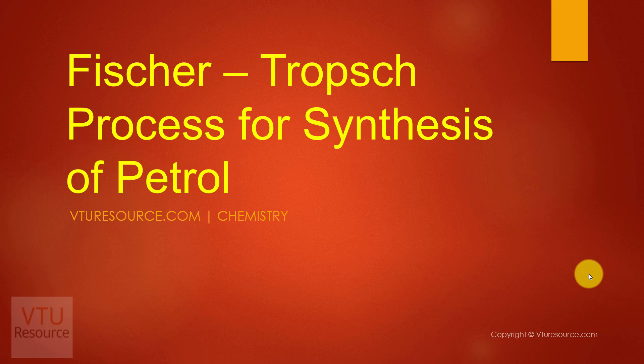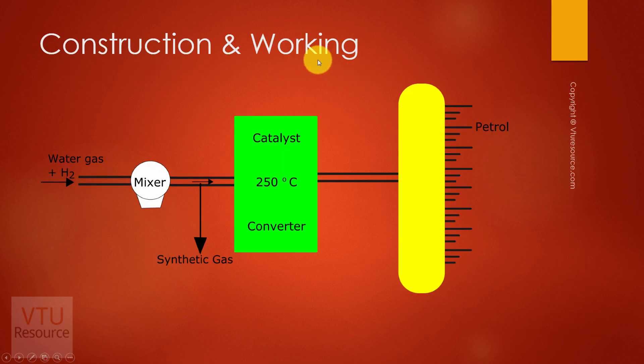Let us see the Fischer-Tropsch process to synthesize petrol. The Fischer-Tropsch process consists of a mixer, a converter, and a fractional distillation column. The petrol obtained is known as synthetic petrol.